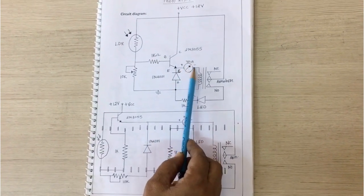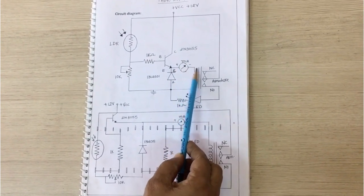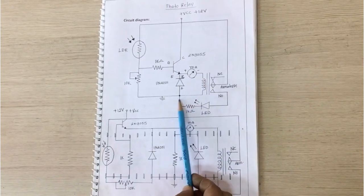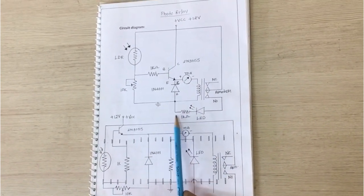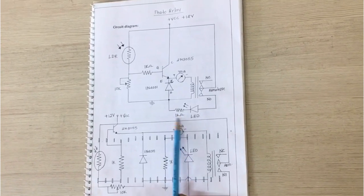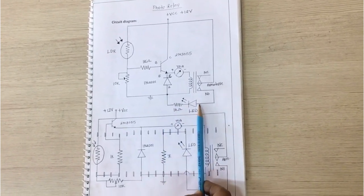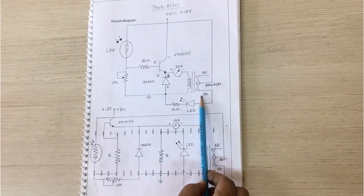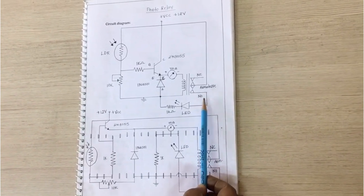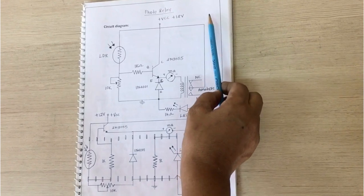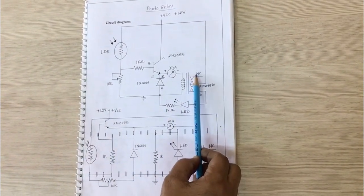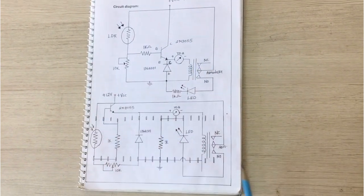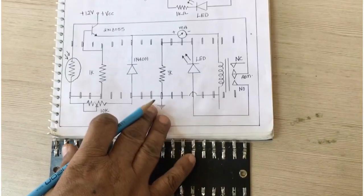We are using a current meter — one end of the current meter is connected to the coil point and the other coil point is ground. There is also a 1 kilo ohm resistor to ground, and this is an LED. The LED's other end is connecting to the normally open and common contacts. The armature diode connects to VCC, and the normally closed contact is open. This is your circuit diagram and breadboard diagram.